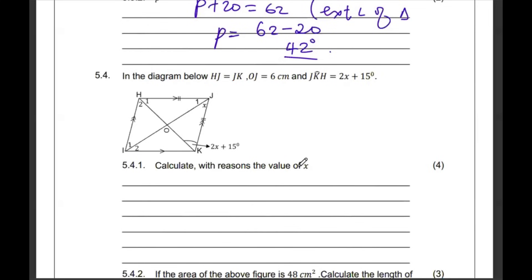So, 5.4, the diagram below, we have HJE being the same as JK. These two are equal. OJ is 6. JKH is 2X plus 15. Calculate with reasons the value of X. So, when you look at this shape correctly, if these two are equal and these sides are also parallel, chances are that this is technically a rhombus. And if it's a rhombus, we know that the diagonals meet at 90 degrees.